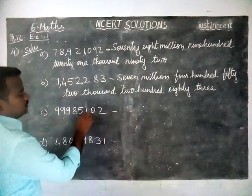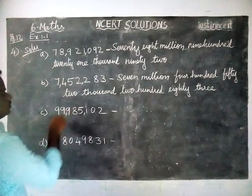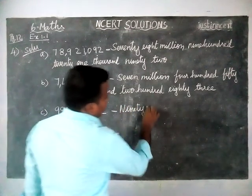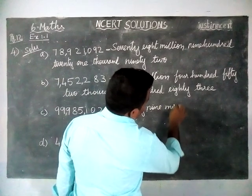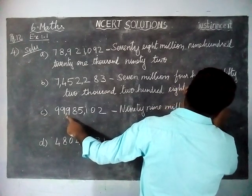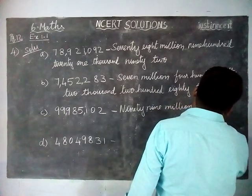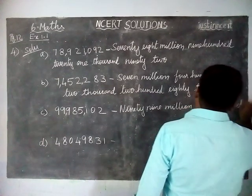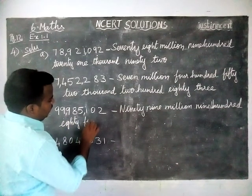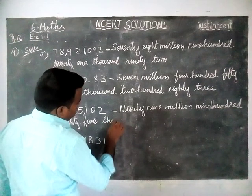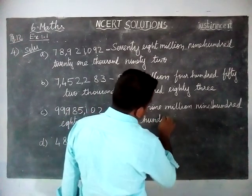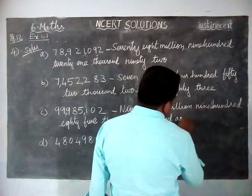Next is the third sum. Ones, hundreds, thousands, ten thousands, hundred thousands, comma, millions, ten millions. Ninety-nine million, nine hundred eighty-five thousand, and two. So the third number is 99,985,002.